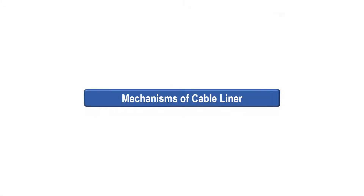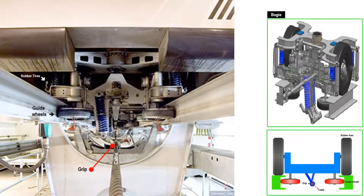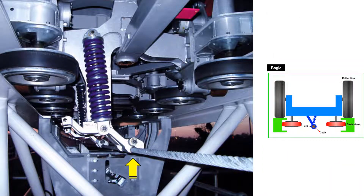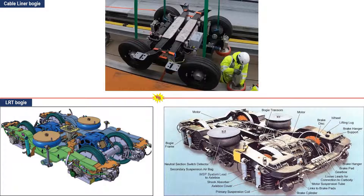Mechanisms of a Cable Liner. These are the mechanisms under the train set that carries a total of 190 passengers. These are the tires that carry the weight of the train and glide over the tracks. The train set is pulled by this cable. This is a close-up view of the grip — the spring facilitates the clamping and unclamping of the grip. The guide wheels lessen the swaying movement of the train as it travels. The bogey of a cable liner is composed of four tires, the chassis, and other small minor parts.